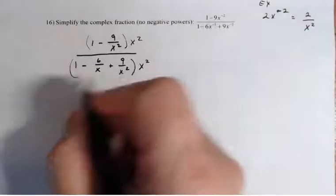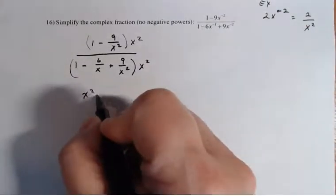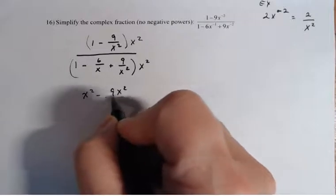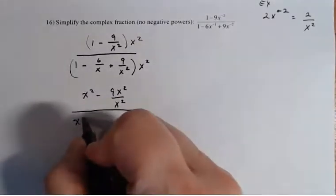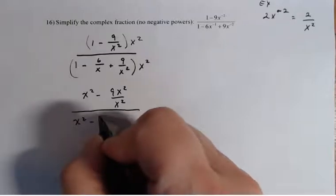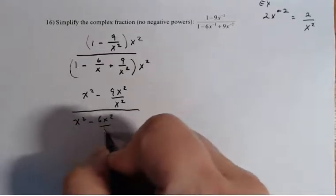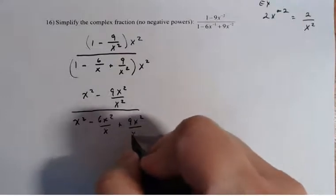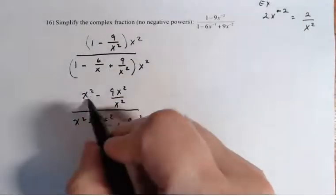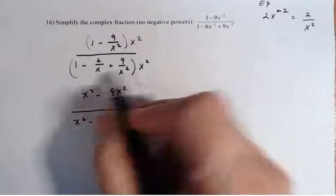So I'm going to distribute that x squared. So I have x squared minus 9x squared over x squared. And in the denominator, I have x squared minus 6x squared over x plus 9x squared over x squared. So I just distributed the x squared to every term.